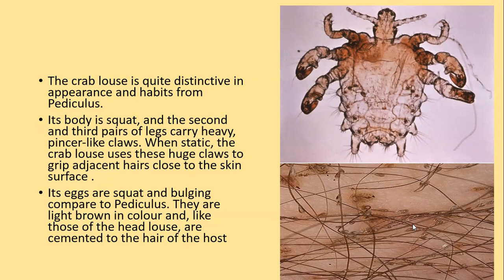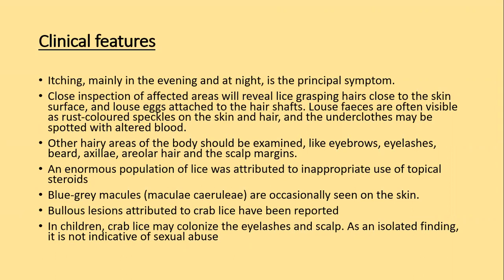Clinical features: itching, mainly in the evening and at night, is the principal symptom. Close inspection of the affected area will reveal lice grasping the hair close to the skin surface and louse eggs attached to the hair shaft. Louse feces is often visible as rust-colored specks on the skin and hair. All hairy areas of the body should be examined, including eyebrows, eyelashes, beard, axilla, areolar hairs, and scalp margin. An enormous population of lice has been attributed to inappropriate use of topical steroids. Blue-gray macules known as maculae ceruleae are occasionally seen on the skin. Crab lice in children should not be considered as an indication of sexual abuse.